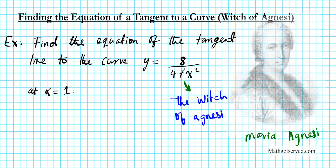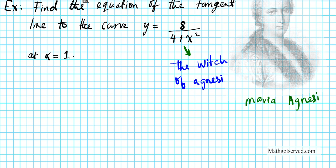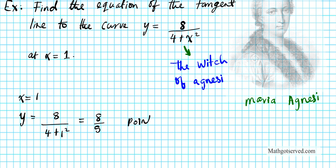Let's go ahead and calculate the equation of the tangent line for this curve, and I'll show you graphically what our solution looks like. To write the equation of the line, we need a point. We know x equals 1, so y equals 8 divided by (4 plus 1 squared), which is 8 over 5. So the point is (1, 8/5).